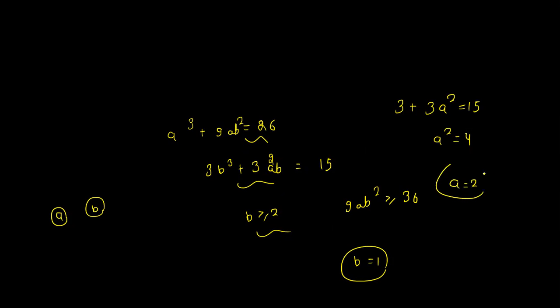So a is 2, b is 1. So (2,1) satisfies: 8 plus 9 times 2 which is equal to 26. So this is our answer.